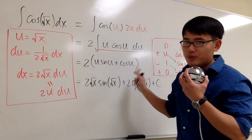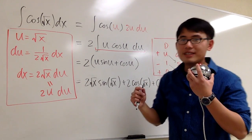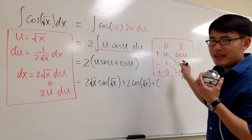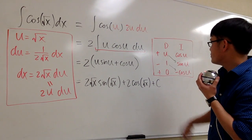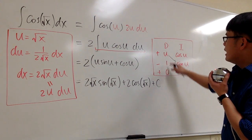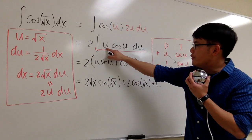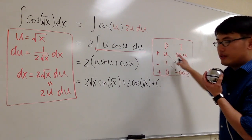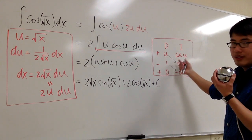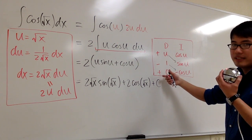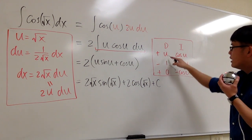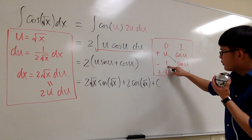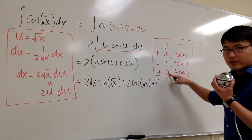This integral is much more doable because we can use integration by parts. Let me show you with the DI method on the side. For the DI method, I'm going to differentiate the u and integrate the cosine u. Don't forget the plus-minus column on the side. Differentiating u gives you 1, and then when you take the derivative of 1, it gives you 0.